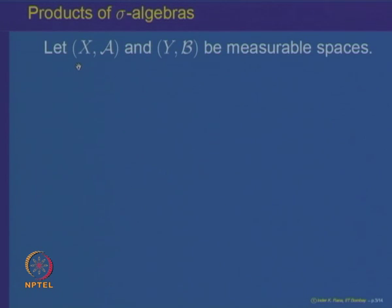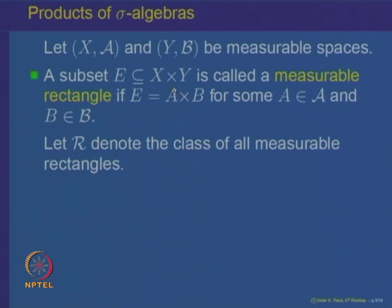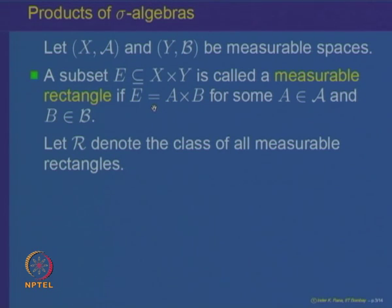Let us start with two measurable spaces X, A and Y, B. Then a subset of the product space X×Y, a subset E, is called a measurable rectangle if it looks like A×B, where A belongs to the sigma algebra A and B belongs to the sigma algebra B. The collection of all measurable rectangles will be denoted by R, and each subset is of the type A×B.